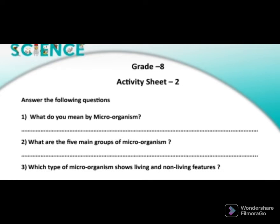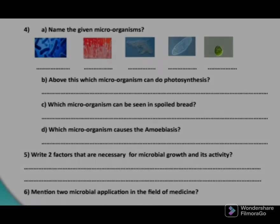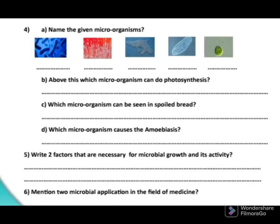Let's go to the next question: name the given microorganisms. Five microorganism structures are given, and we should be able to select the suitable name for each. The first figure is bacteria. The second figure is Mucor — Mucor is a type of fungi. The third diagram is Amoeba. The fourth diagram is Paramecium. The fifth diagram is Chlamydomonas.